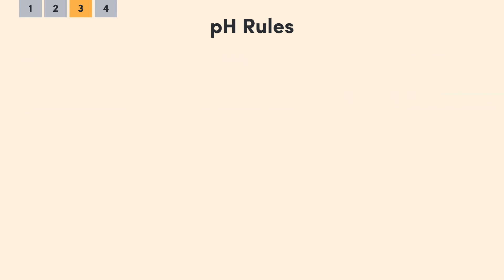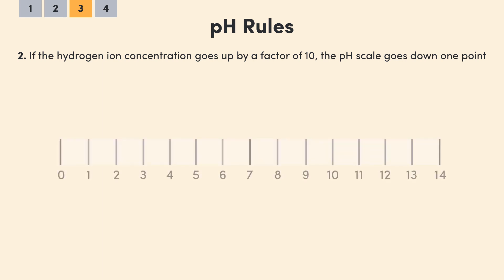Second trick. I did promise I'd stay away from too much maths, but using a log scale does come with one interesting property it's good to be aware of. The rule is that if the hydrogen ion concentration goes up by a factor of 10, the pH scale goes down by one point. So take our hydrogen ion concentration of 0.01. We know the pH is 2. If we multiply this concentration by 10, the pH goes to 1. If we multiply the concentration by 10 again, the pH goes to 0.